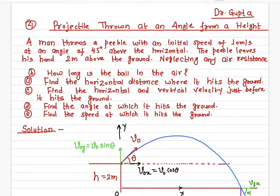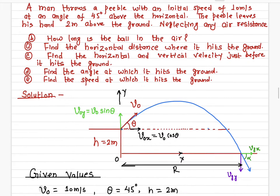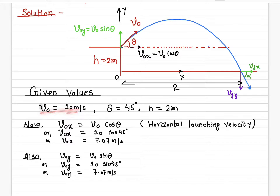In this problem I will talk about a projectile which is thrown from a height but at an angle theta. You need to find out the same things as in the previous problem: the horizontal range, how long it remains in the air, the horizontal and vertical velocities, and at what angle it hits the ground. The given information is: initial velocity 10 meters per second, angle theta equals 45 degrees.